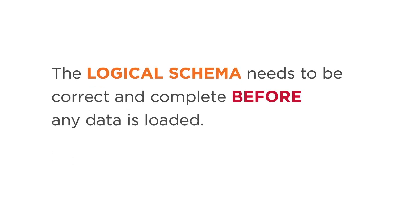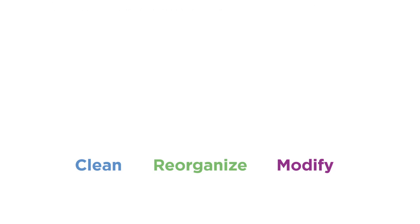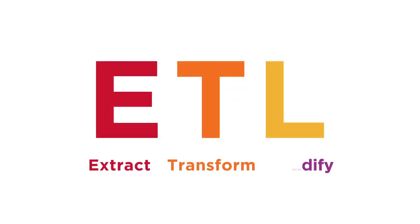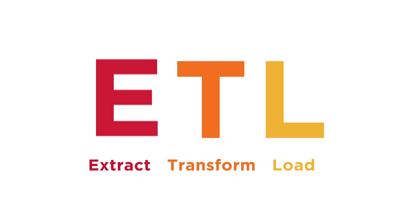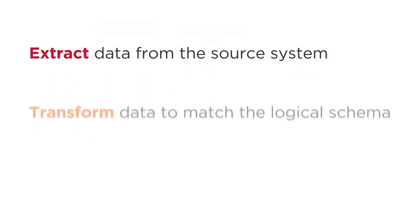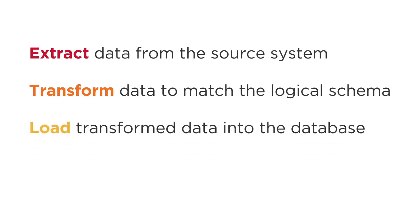The logical schema needs to be correct and complete before any data is loaded. You'll also need a process to clean, reorganize, and modify incoming data. This is ETL — extract, transform, and load. We extract data from the source system, transform data to match the logical schema, and load transformed data into the database.